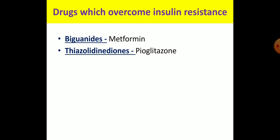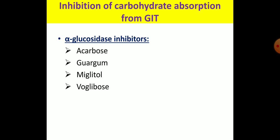The drug which decreases hepatic glucose output is metformin. The drugs which inhibit carbohydrate absorption from the small intestine act by inhibiting alpha-glucosidase enzymes, which are present on the brush border of the small intestine and are required for carbohydrate absorption. These drugs are acarbose, guar gum, miglitol, and voglibose.